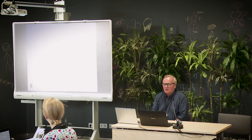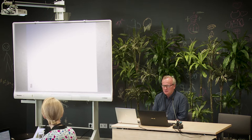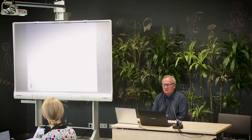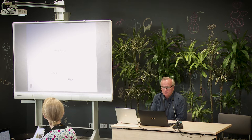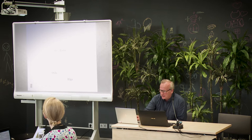Norway is a fairly young nation — it became a nation in 1814, so the first legal deposit law was from 1815. It was removed and reinstated again, but for the last hundred years we've had a steady flow of books coming into what was then the university library. The National Library is actually a new thing. Looking at the map, you can see Riga at the lower right corner, Oslo, and Mo i Rana, which is in the northern part of Norway.